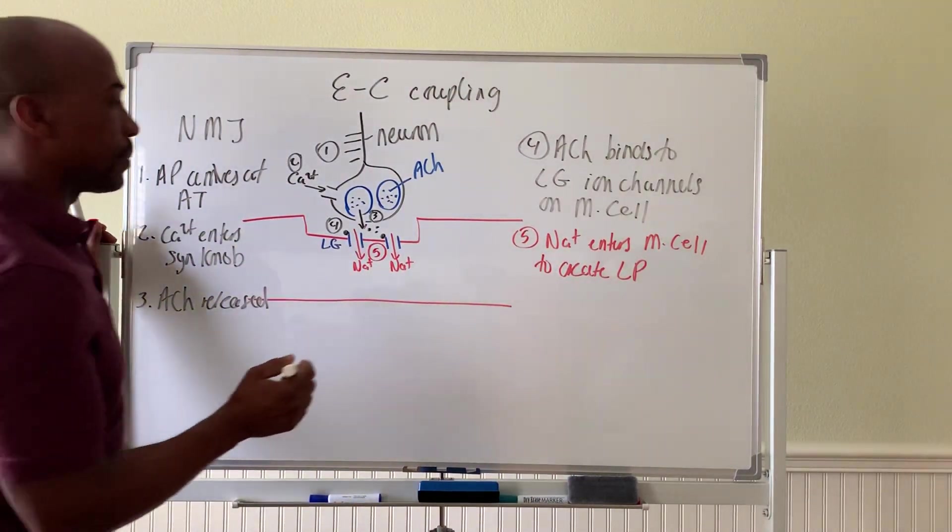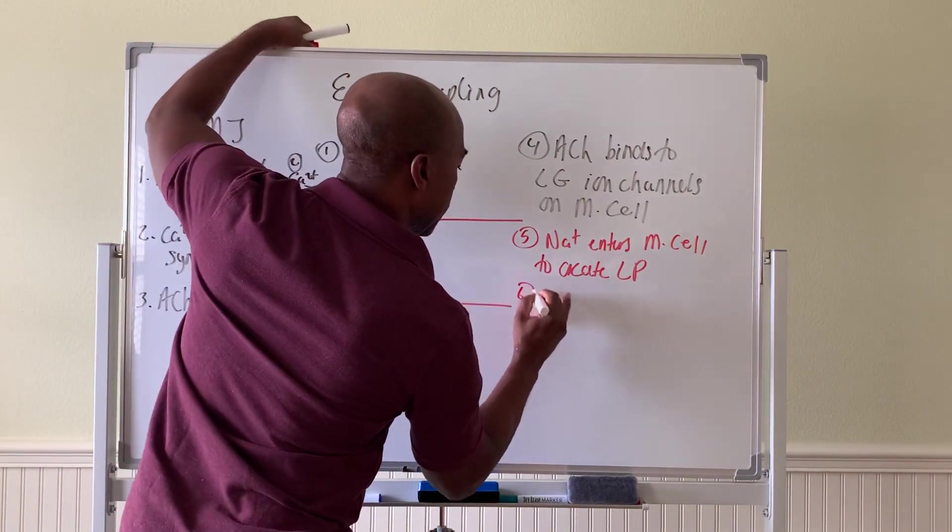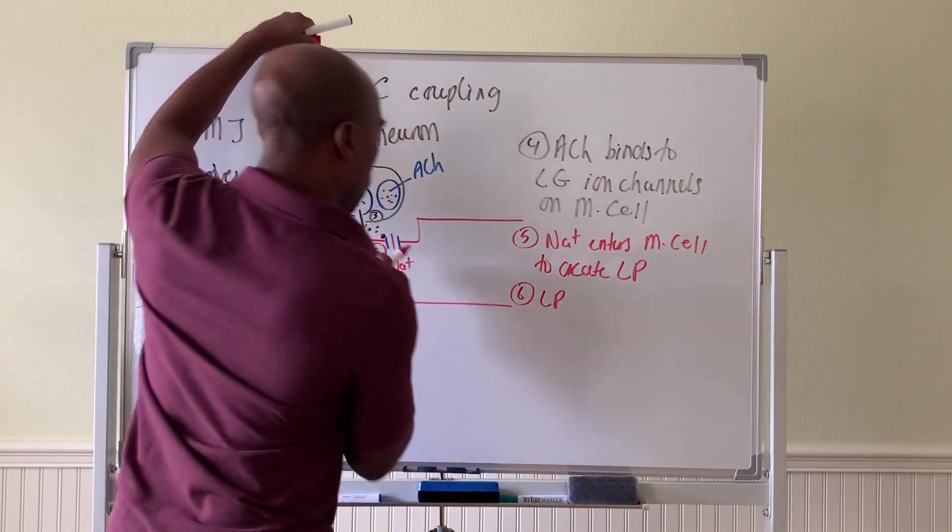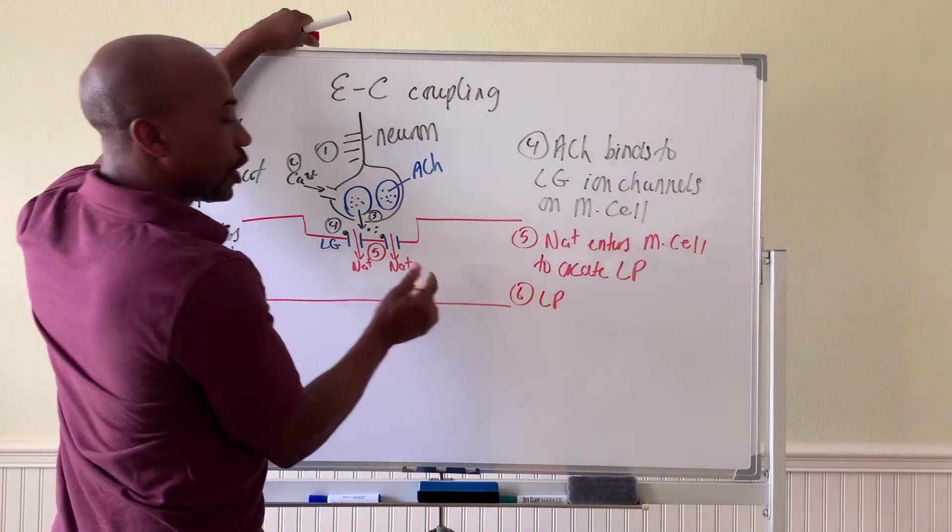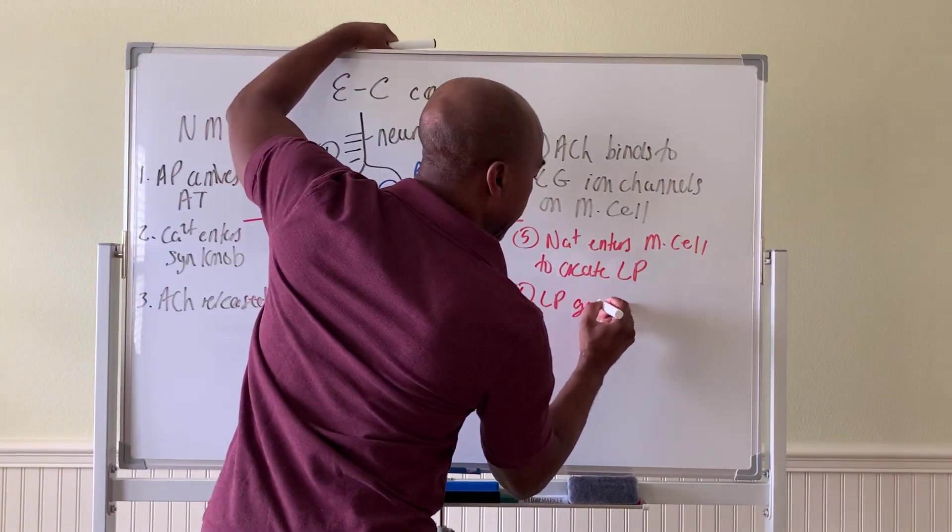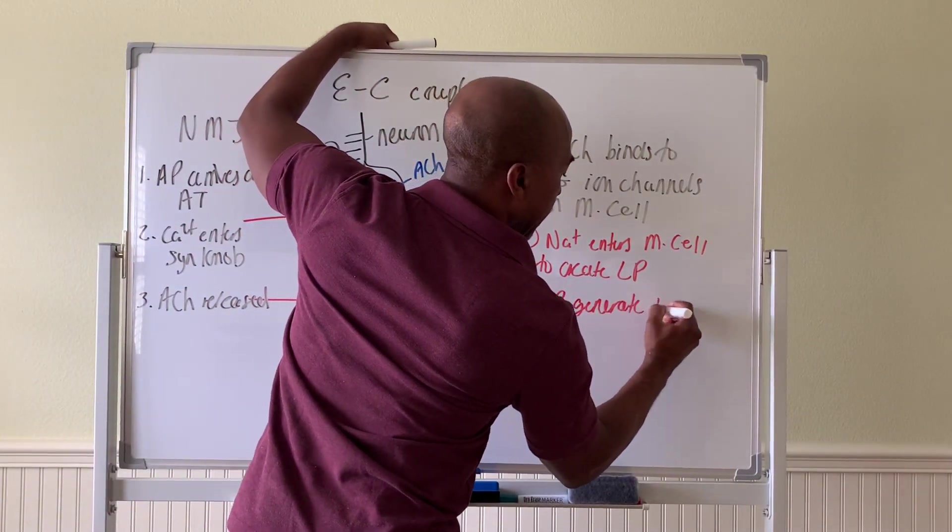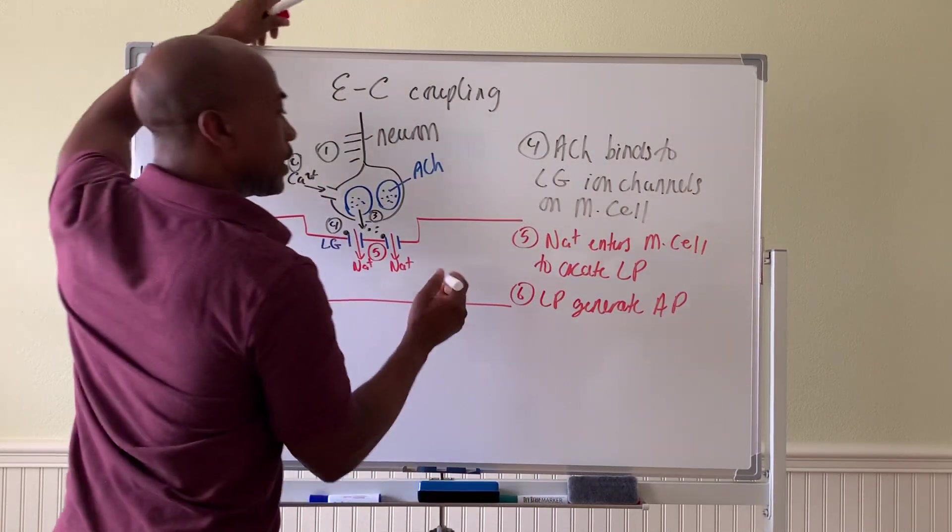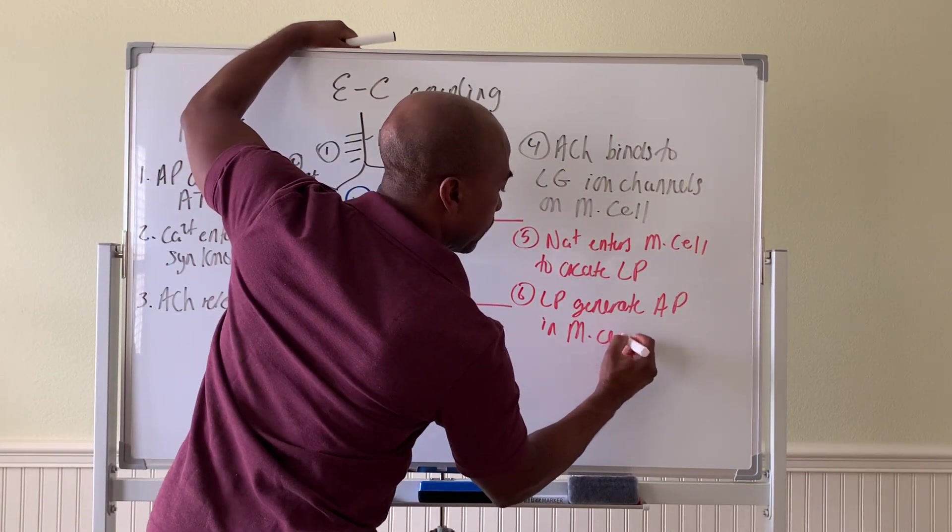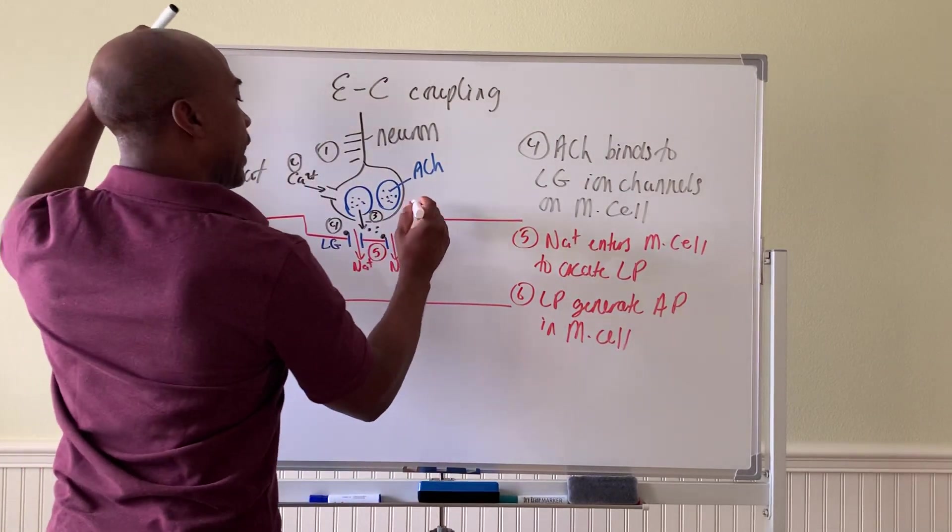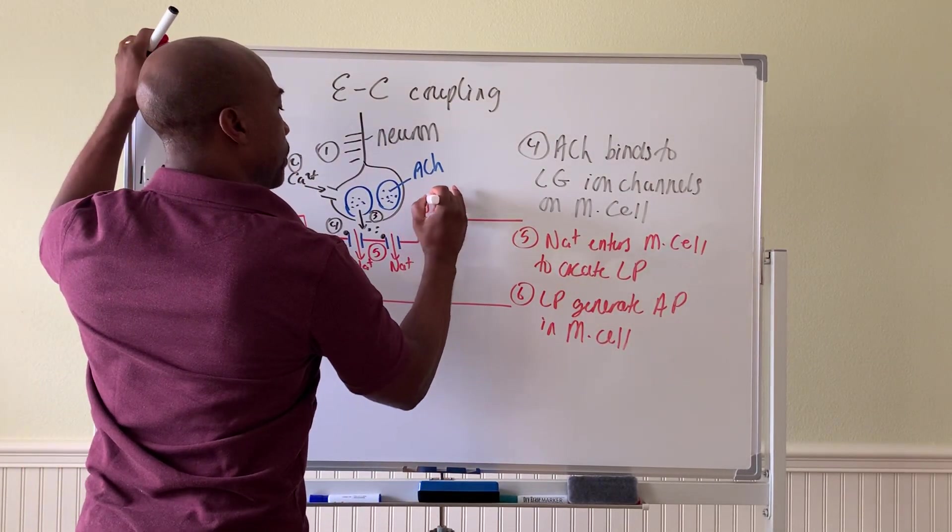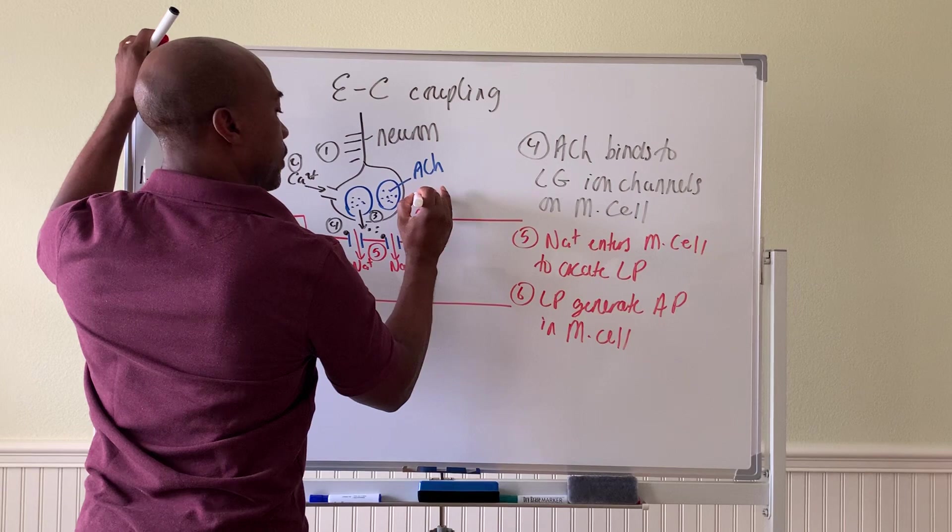Then step six is local potential caused by the sodium influx will generate an action potential in the muscle cell. So here is step five. The action potential is generated—step six.